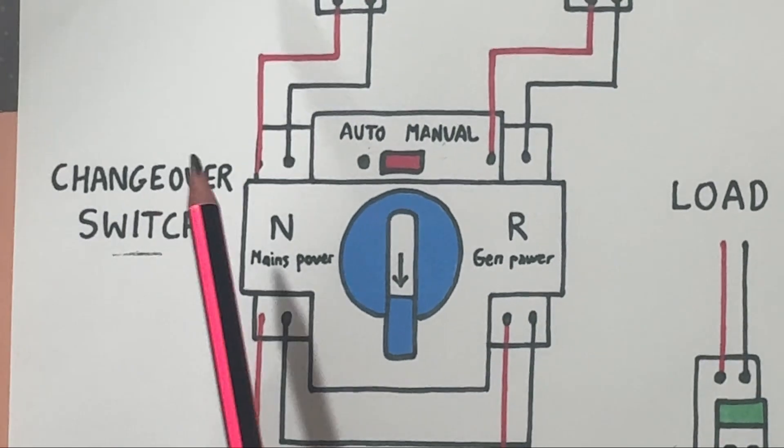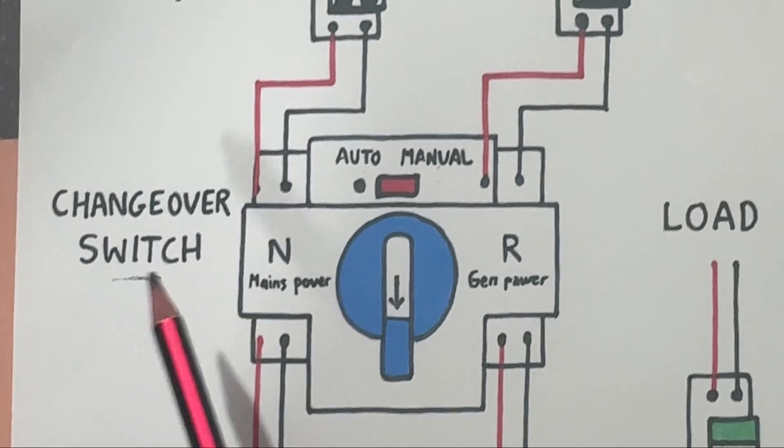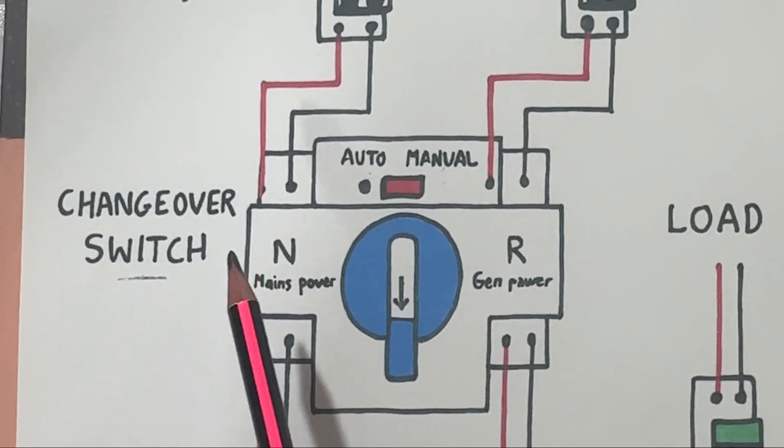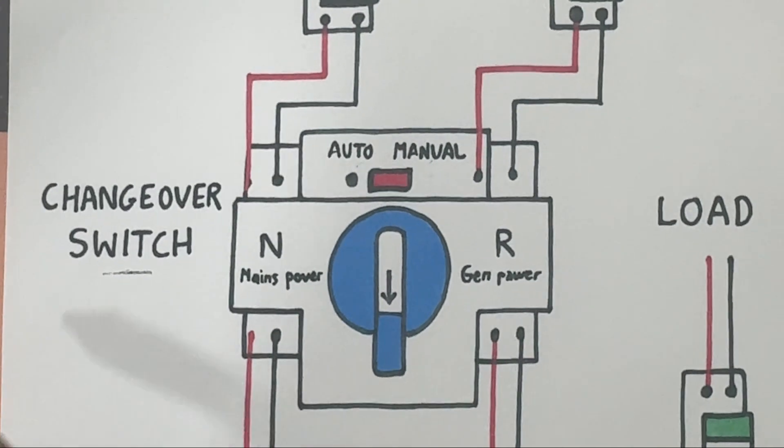When grid power is available, the switch stays in the normal position. The load is supplied by the main power.